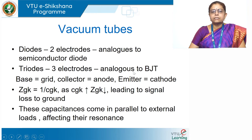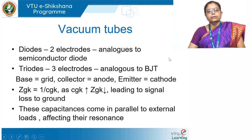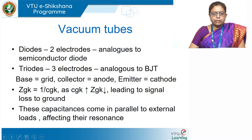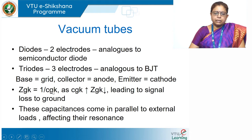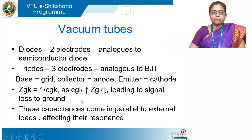A triode has three electrodes, arranged in a cylindrical structure. Taking the cross-section, the cathode is at the bottom, the grid is closer to the cathode, and the anode is on top. The subscript G indicates grid, K indicates cathode, C indicates capacitance, and Z indicates impedance. You know that impedance is inversely proportional to capacitance — as the capacitance value increases, the impedance value reduces.